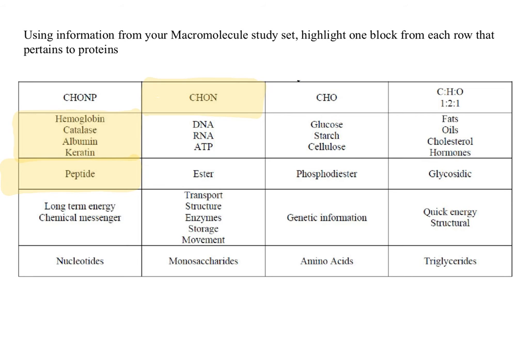The fourth row, you're going to highlight the function of proteins. In this row, you should have highlighted transport, structure, enzymes, storage, and movement. There are lots of different proteins involved in a bunch of different functions in our bodies and the cells of other organisms as well.